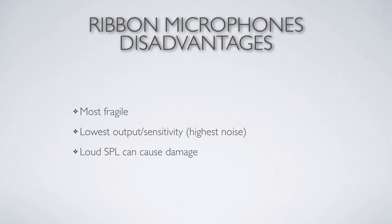The disadvantages: ribbons are by far the most fragile. The ribbon can be damaged just by sound pressure alone — you wouldn't want to put an old ribbon inside a bass drum because the drummer would almost surely damage or tear the ribbon. If you drop them, they'll almost certainly get damaged. They have the lowest output or sensitivity, therefore the highest noise because they require more gain in the microphone preamplifier. Loud SPL can also cause damage.